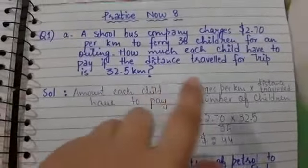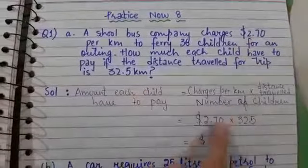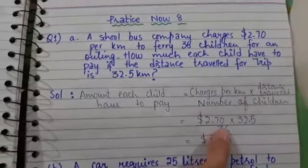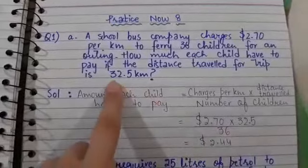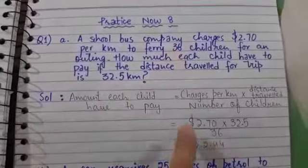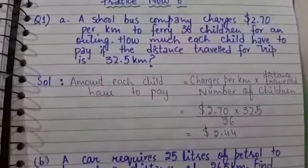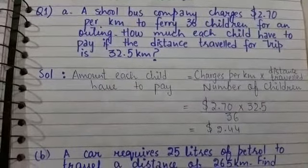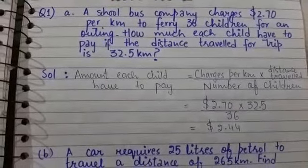As the charges per kilometer is $2.70, we put it here, multiplied by the distance traveled, 32.5 kilometers, divided by the number of children, which is 36. After the calculation, we can easily find the answer, which is $2.44.